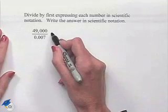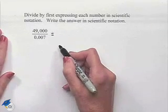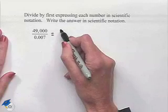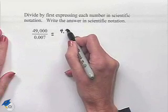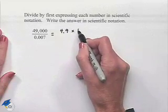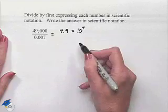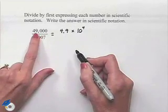So we're going to start off by taking our numerator, which is 49,000, and writing it as 4.9 times 10 to the fourth power, as we've moved our decimal place four places to the left.